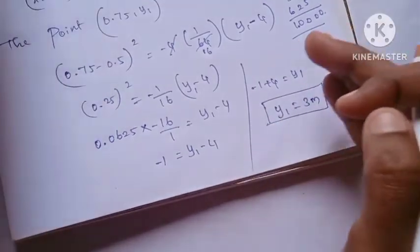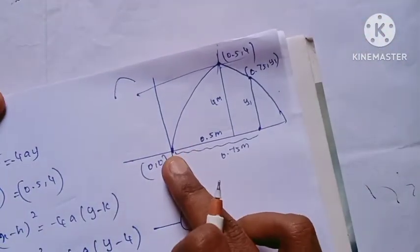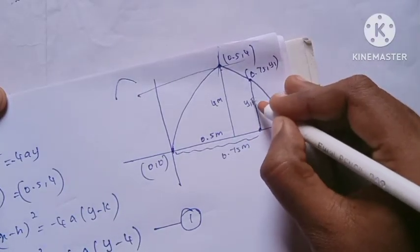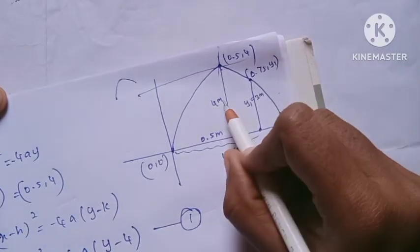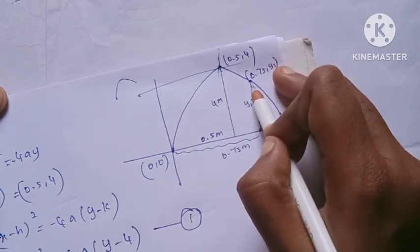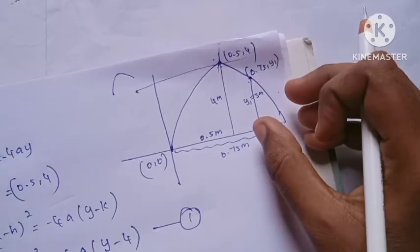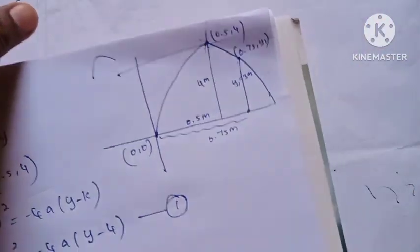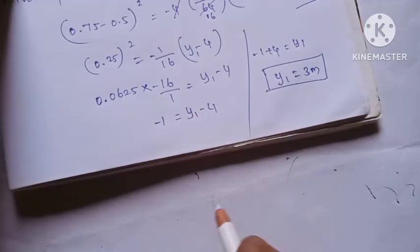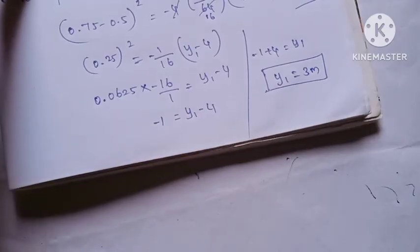The height of the water at a horizontal distance of 0.75 meter from the origin is 3 meters. Thank you.